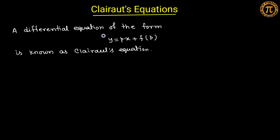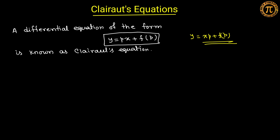This is the general form of Clairaut's equation: y = px + f(p). On the left hand side is y, and on the right hand side is xp + f(p), meaning y is a function of x and p. This is the general form of equations solvable for y, which was discussed in the last lecture. Clairaut's equation is one type of solvable-for-y equation, where the right-hand side must be written as the product of x and p, with the remaining part being a function of p only.